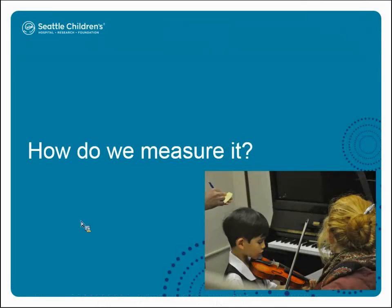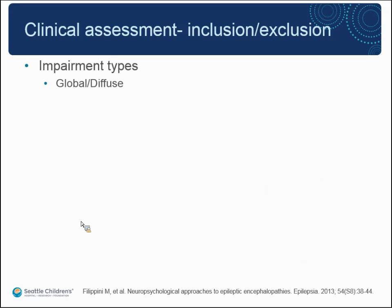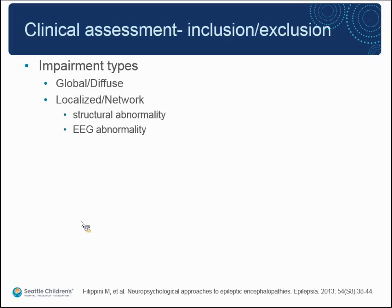How do we actually measure this? My colleagues and I would basically say we have no idea. What's been discussed in the literature includes trying to classify the impairment: is it global and diffuse or localized? If localized, does it fit within a particular network or node we would expect? Does it correlate with structural abnormality on MRI? Does it correlate with the EEG abnormality? Or is it just an abnormality identified by a parent or clinician?